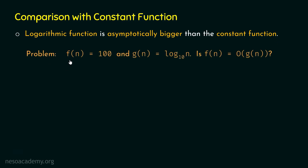Here is the problem: let f(n) = 100 and g(n) = log n base 10. This means f(n) is the constant function and g(n) is the logarithmic function. Is f(n) = O(g(n))? Can we say g(n) is asymptotically bigger than f(n)? If so, we can conclude that logarithmic functions are asymptotically bigger than constant functions. Try solving this on your own first.